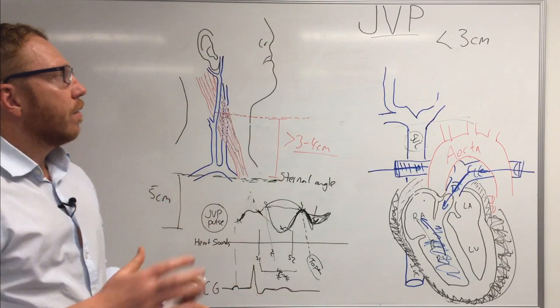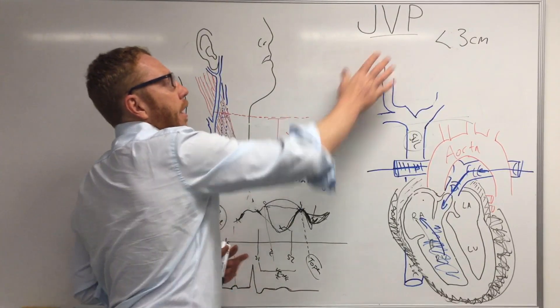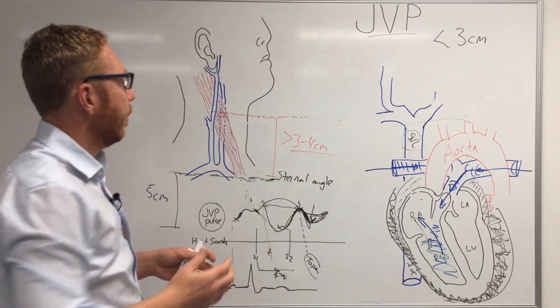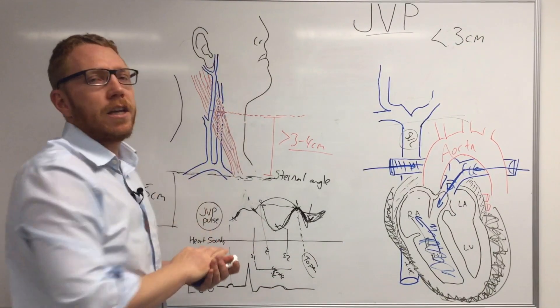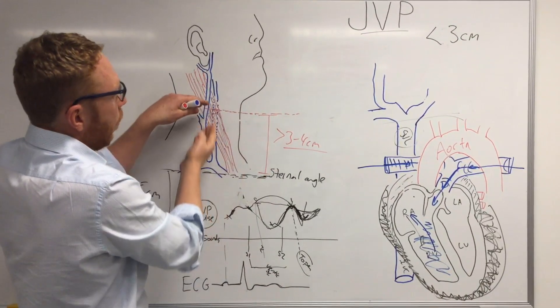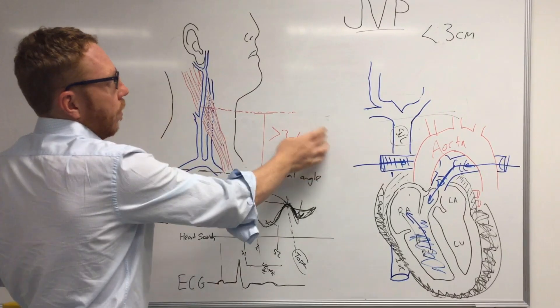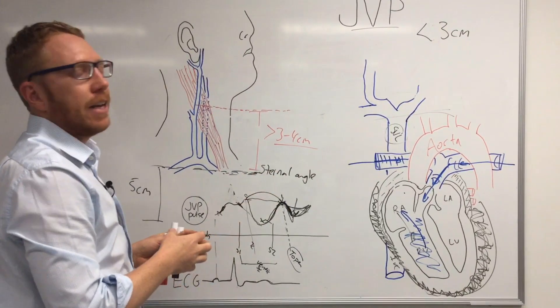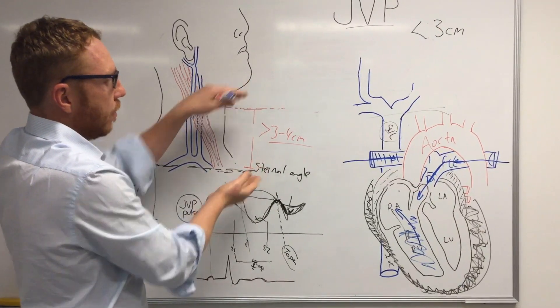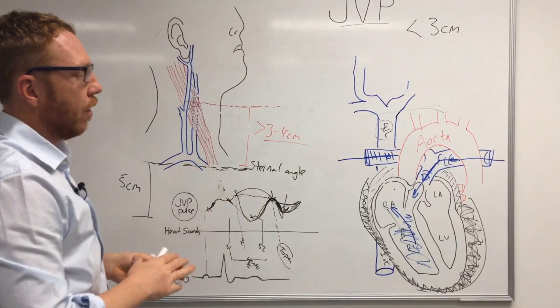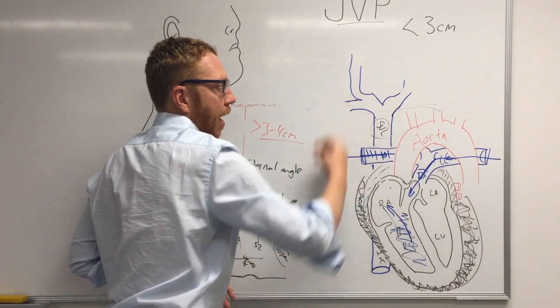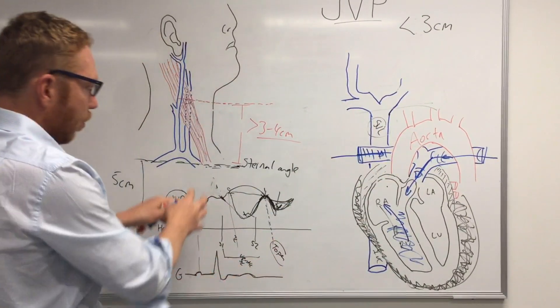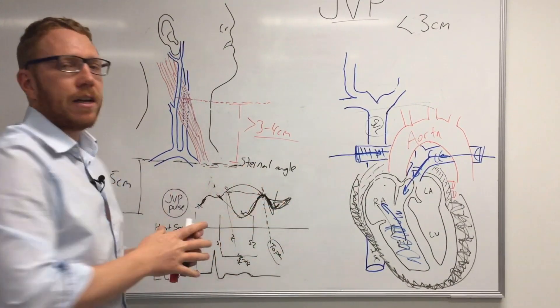So that's the end of today's one on JVP. Hopefully now you have an understanding of where the internal jugular is, how you would measure it, what you're looking for, what the amount is for at least the height compared to the sternal angle, what's kind of happening in the heart functionally, and then more the physiology, and particularly with pathology.